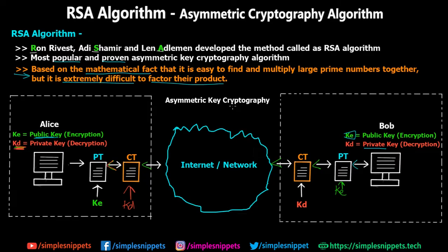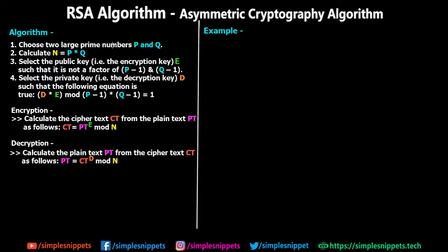Let's move on to the actual RSA algorithm step by step, and then we'll see an example. Step one: choose two large prime numbers P and Q. In our example we take P as 7 and Q as 17 — small numbers for simplicity, but in reality these are very large. Step two: calculate N = P × Q. In our case N = 7 × 17 = 119.